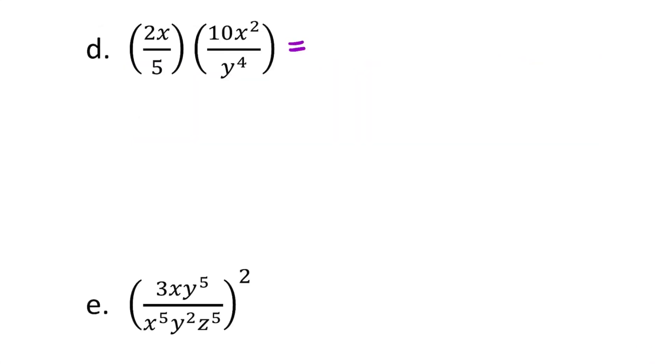This one you've got some fractions. So I'm going to choose to multiply straight across first. That would give me 20x to the third over 5y to the fourth. And then really the only thing you can do is reduce 20 divided by 5 to just 4 over 1. And that is it.